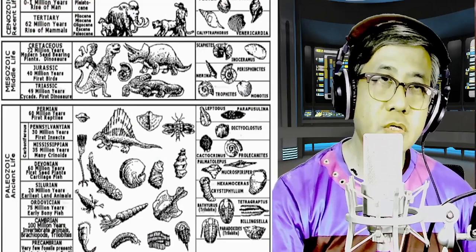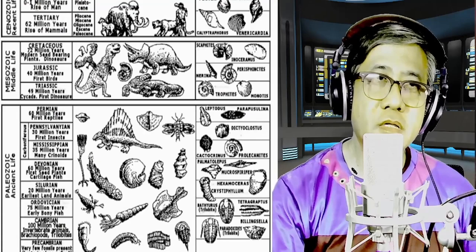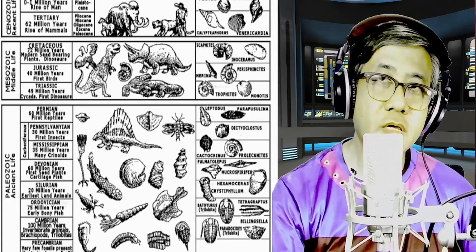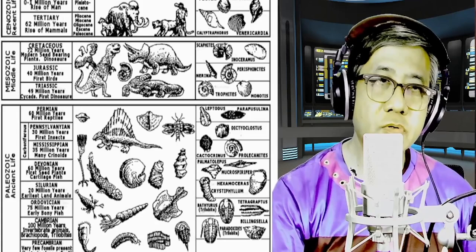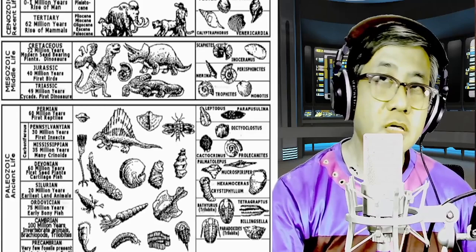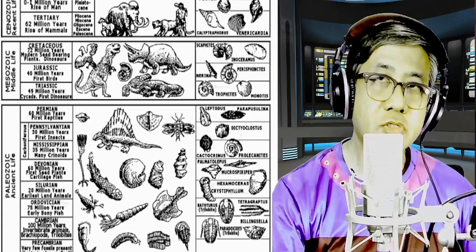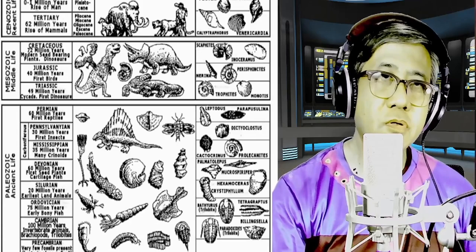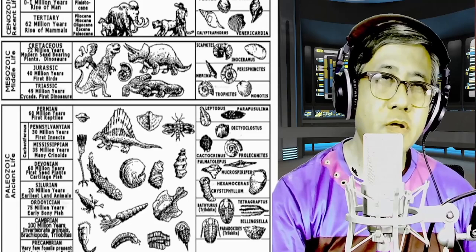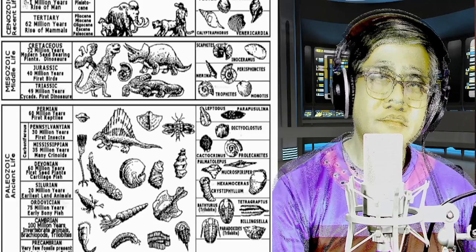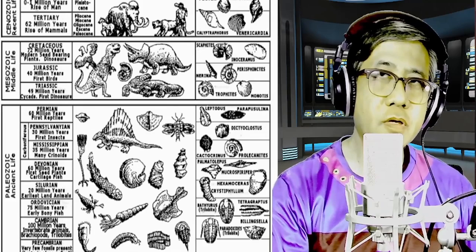The second era is the Mesozoic era, or middle life, sometimes known as the age of the reptiles. Then we have the Cenozoic era, or recent life, the age of the mammals. Each era is composed of different periods. The Paleozoic era has: Precambrian, Cambrian, Ordovician, Silurian, Devonian, Carboniferous, and Permian. The Mesozoic has Triassic, Jurassic, and Cretaceous. The Cenozoic has Tertiary and Quaternary.